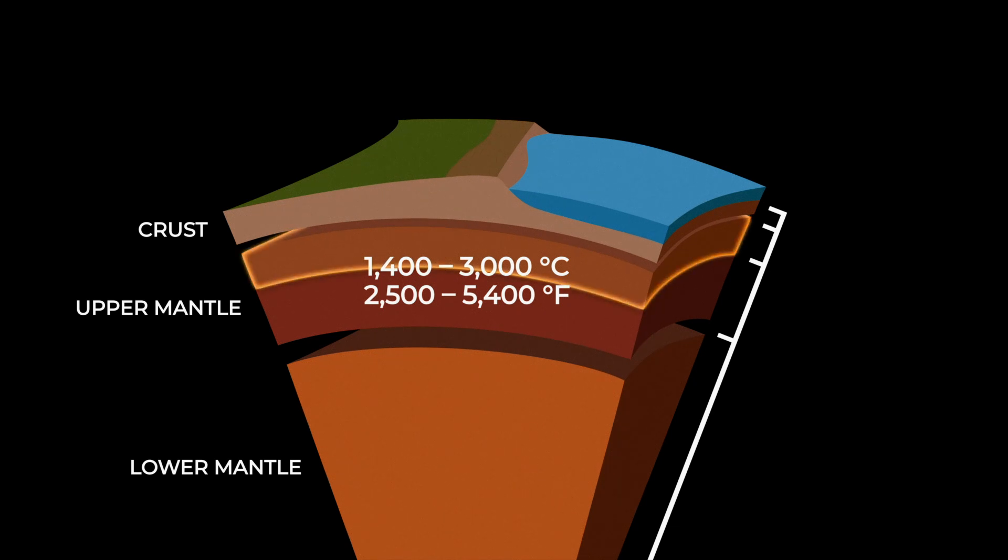However, the topmost part of the upper mantle is composed of hard rock, whereas the bottom part of the upper mantle has both hard rock and soft rock that bends and flows.